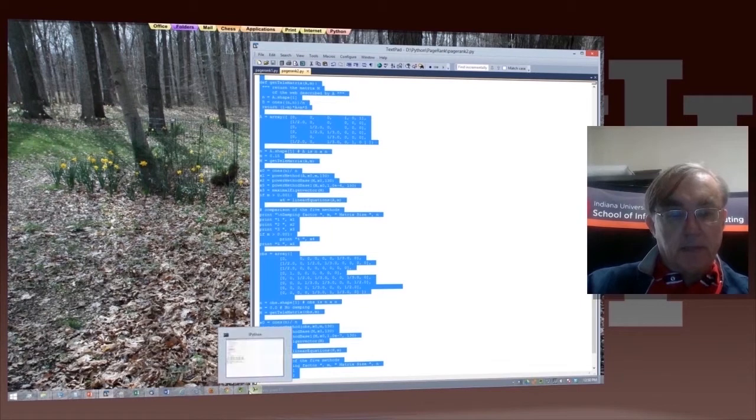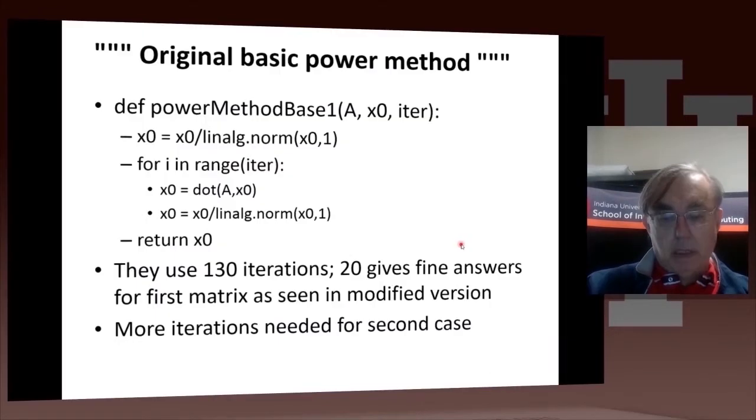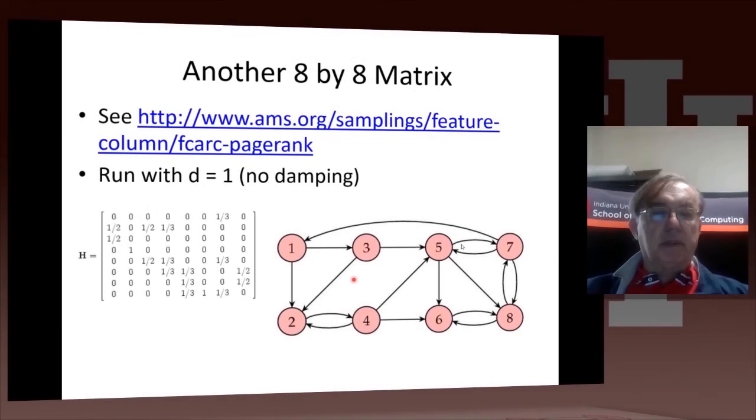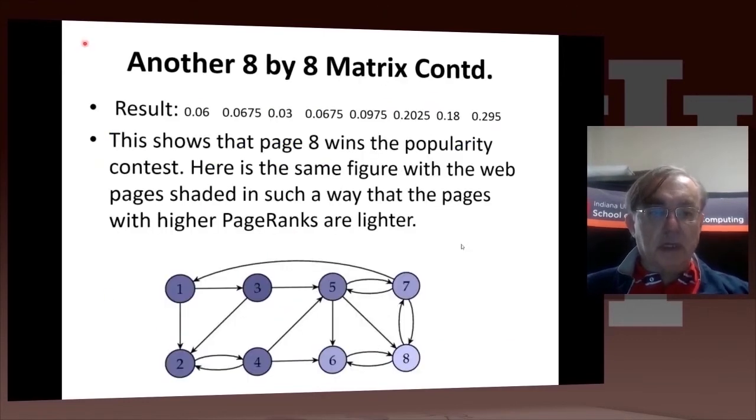So that's the page rank Python here. And this is the second 8x8 matrix, which you got from an AMS website. I don't quite remember why, but they did not want any damping in this case here. And we just... I typed in this... They have this on the website. I typed it into the Python code as a preset definition. And then we ran it, and we got this result.